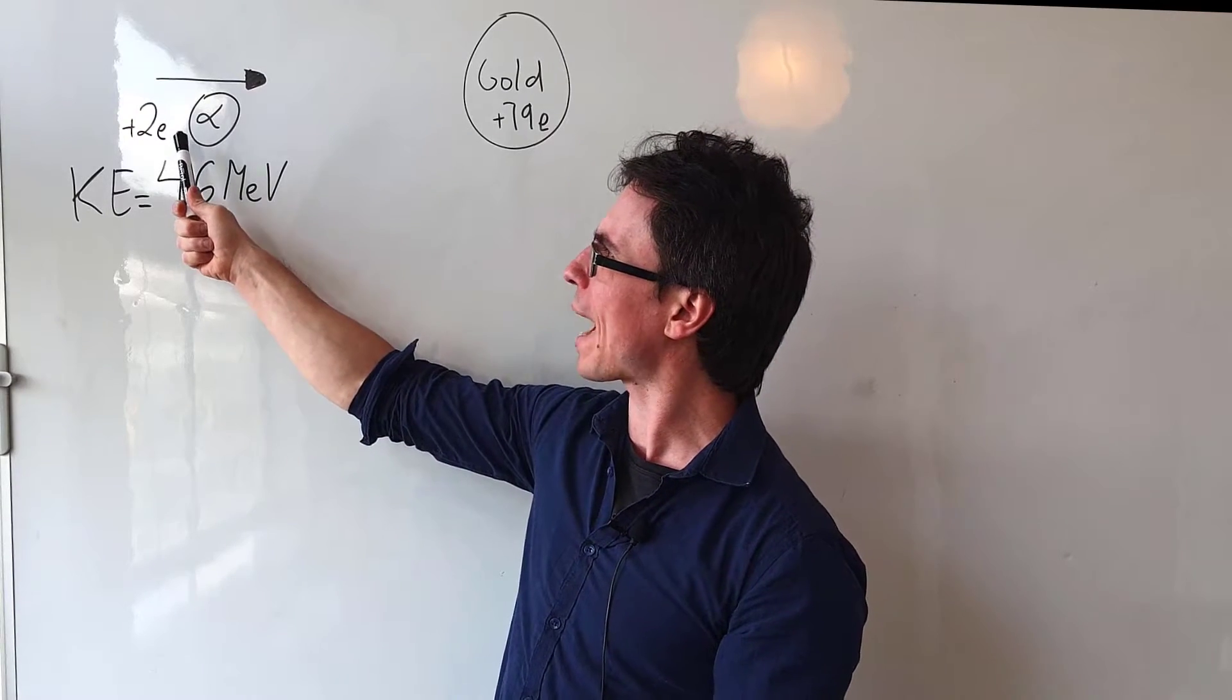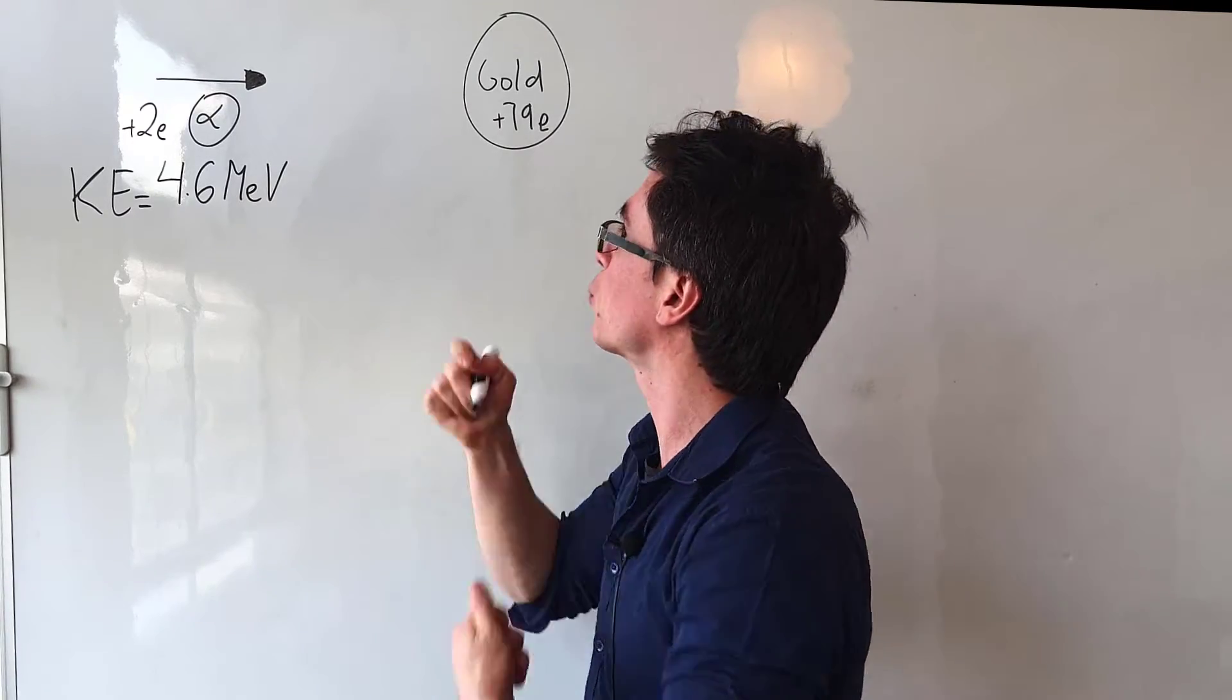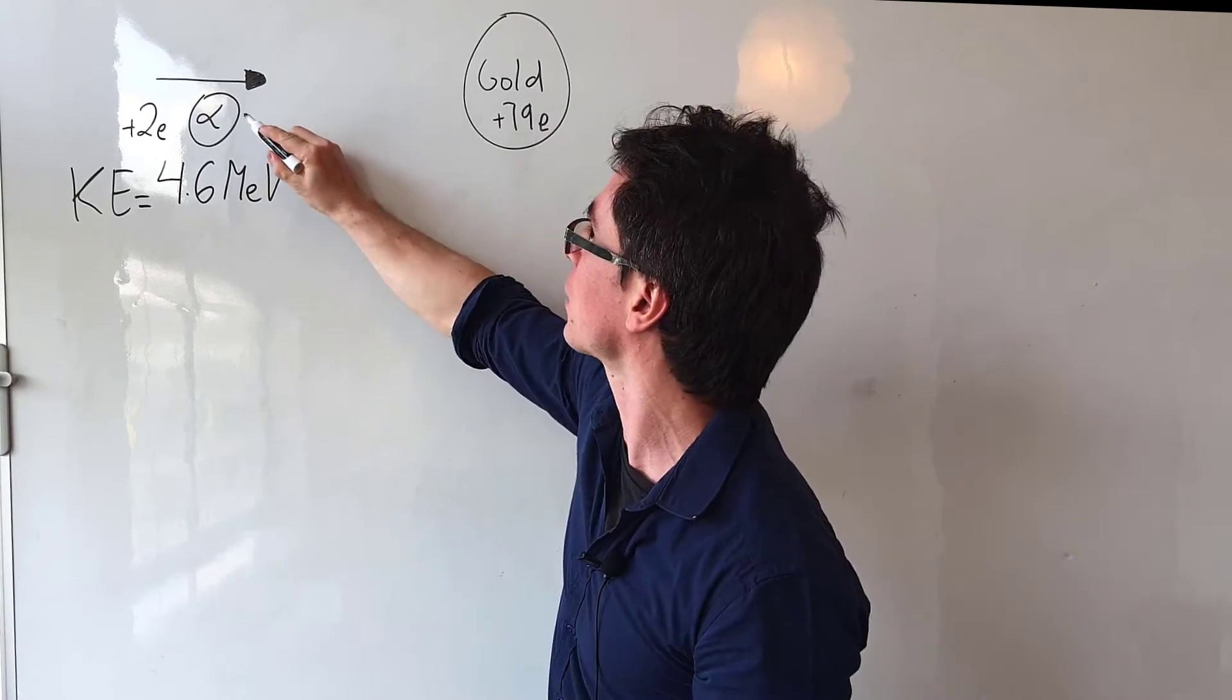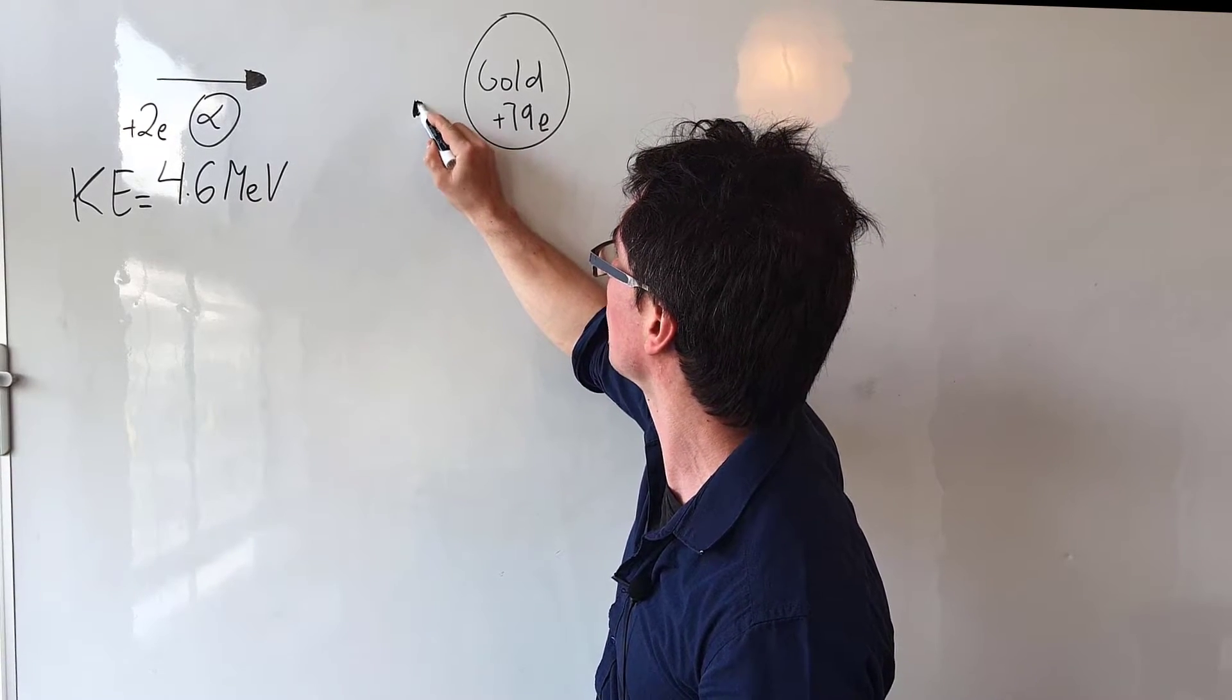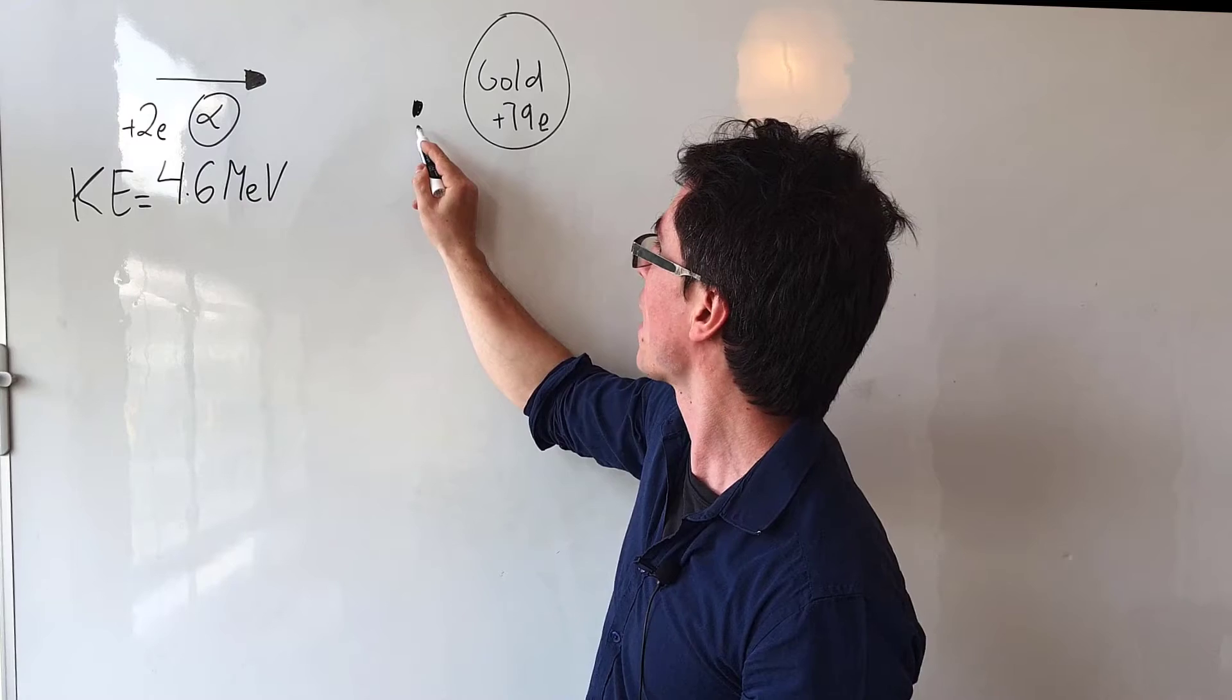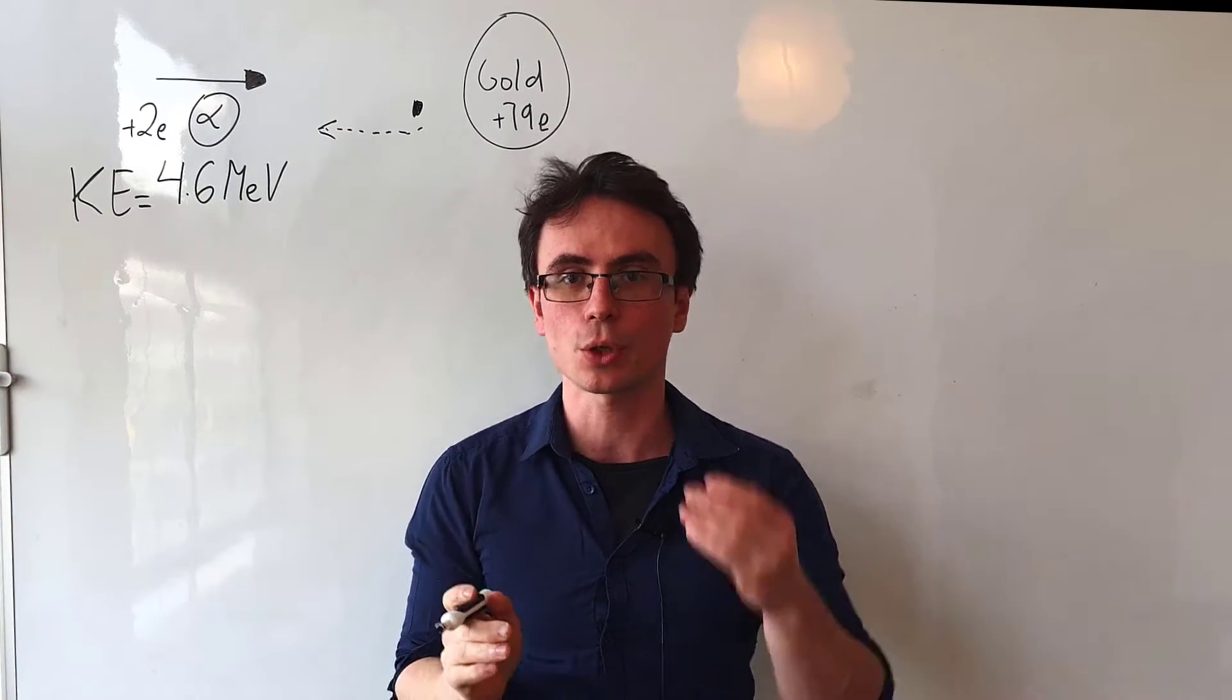If we think about it, as this alpha particle is traveling towards it, it will lose its kinetic energy and it will reach a distance of closest approach, losing speed. Let's say it will reach somewhere there and then it will start traveling back in the other direction.